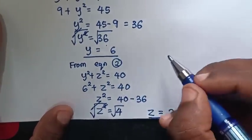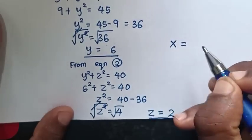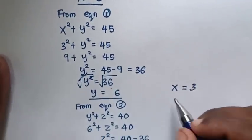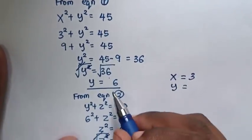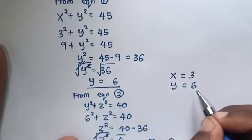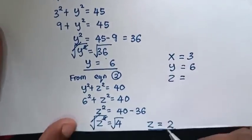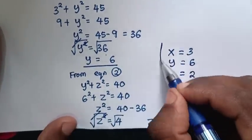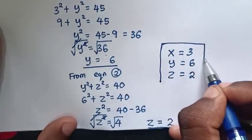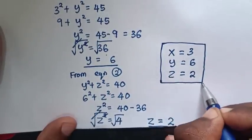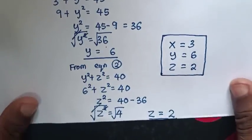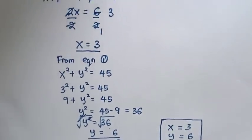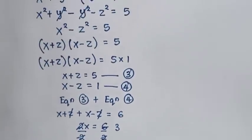Therefore, the value of x is 3, the value of y is 6, and the value of z is 2. This is the final answer. Don't forget these steps. Subscribe to my channel and see you in the next video. Bye-bye.